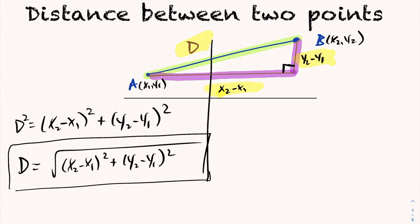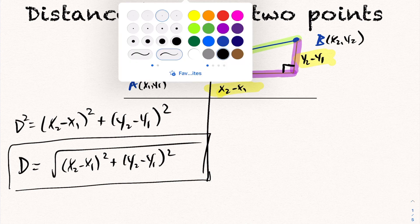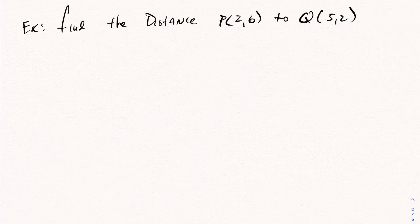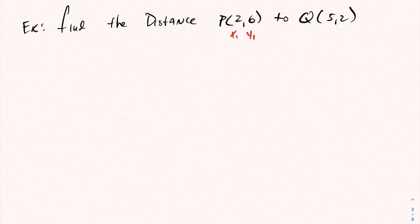So this formula, given any two points, lets you calculate the distance between them. Let's look at an example. To find the distance between two points, label your first point X1, Y1 and your second point X2, Y2.